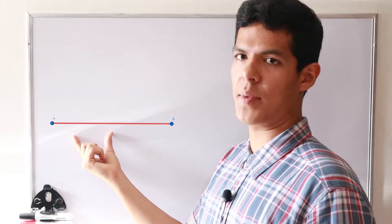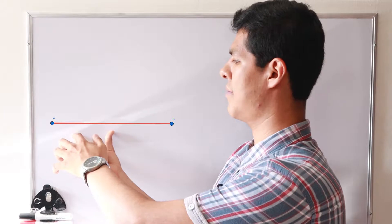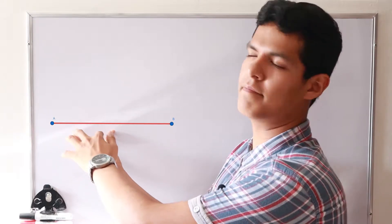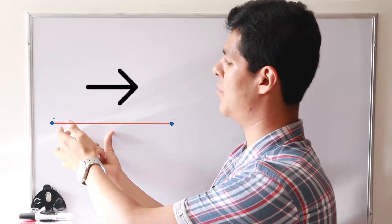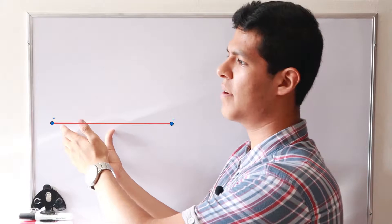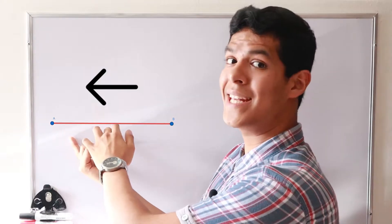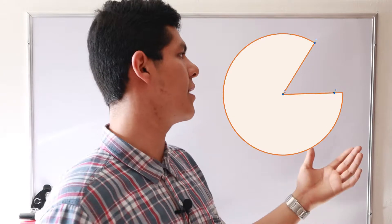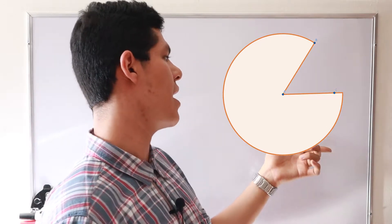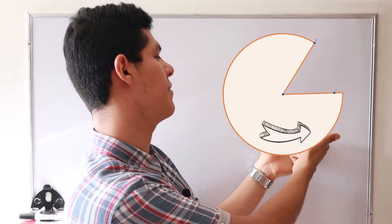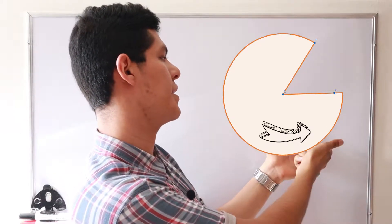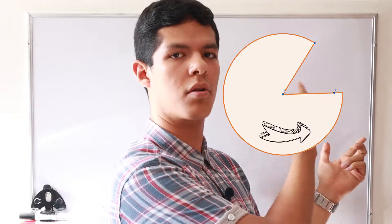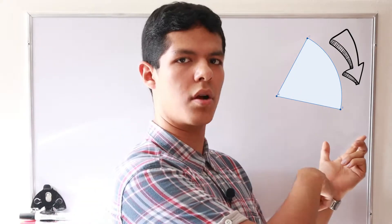So one example is that if we have a segment, we can have a direction. For example, a to b is different than b to a. So another example is that if we have an angle, we can have the direction that is counterclockwise or clockwise.